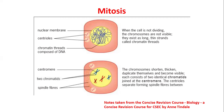For CXC, you need to know the events rather than the phases specifically, but knowing the phases is even better. First, we have a cell that is not replicating. When the cell is not dividing, the chromosomes are not visible — they exist as long thin strands called chromatin threads. We can see the nuclear membrane, the centriole, and the chromatin threads composed of DNA.